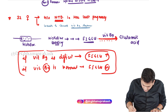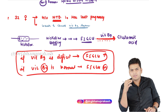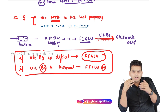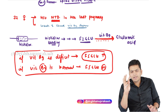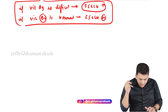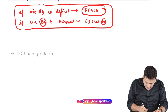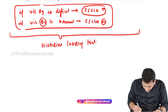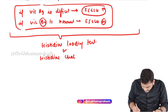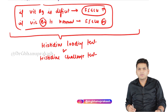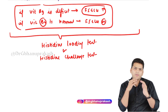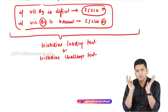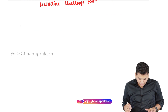This is how we check whether the B9 status is normal or deficient. We take an injection of histidine, inject it, and measure the FIGLU levels. This entire process is referred to as the histidine loading test, also sometimes called the histidine challenge test. This is how we can determine whether B9 is normal or not.